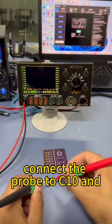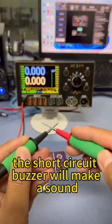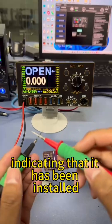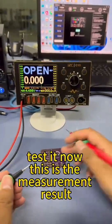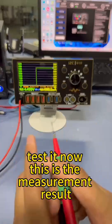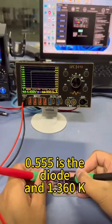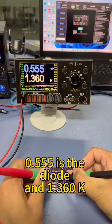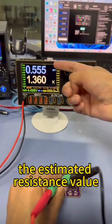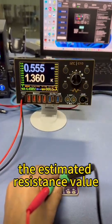Connect the probe to C10 and the short circuit buzzer will make a sound, indicating that it has been installed. Test it now. This is the measurement result. 0.555 is the diode and 1.36 kiloohms is the estimated resistance value.